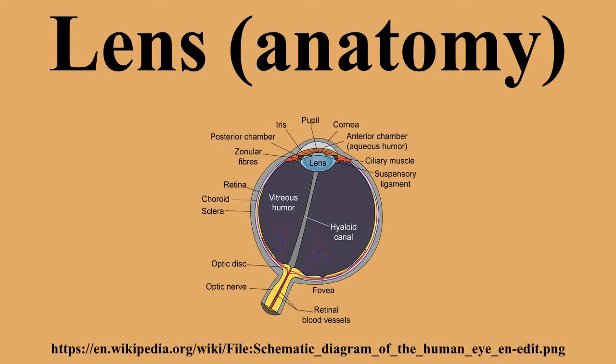The refractive index of the human lens varies from approximately 1.406 in the central layers down to 1.386 in less dense layers of the lens. This index gradient enhances the optical power of the lens. Aquatic animals must rely entirely on the lens for both focusing and to provide almost the entire refractive power of the eye, as the water-cornea interface does not have a large enough difference in indices of refraction to provide significant refractive power. As such, lenses in aquatic eyes tend to be much rounder and harder.